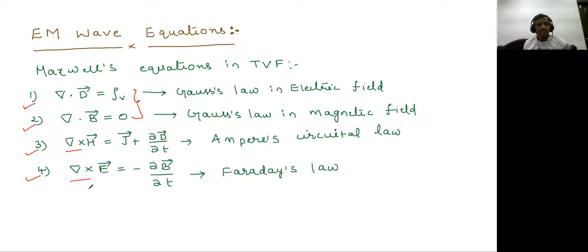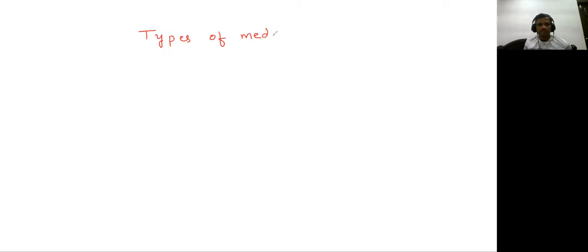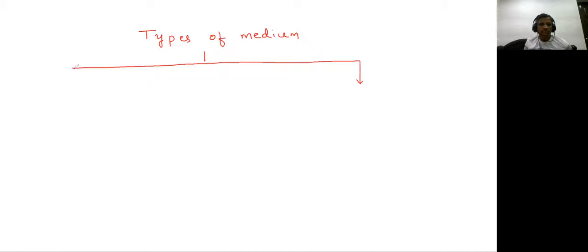Now let us look at the various media. We are looking at these media because Maxwell's equations will be seen in two types of medium: one is lossless medium, another is lossy medium. We will classify these types of mediums into two types: lossless and lossy.